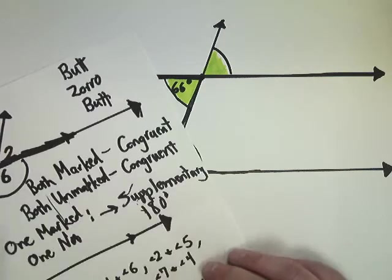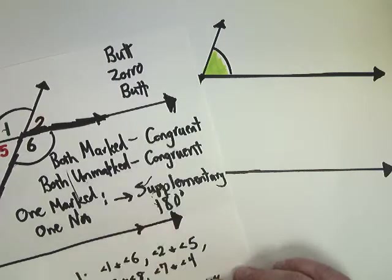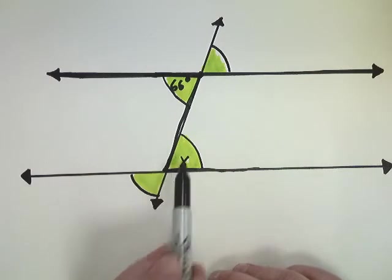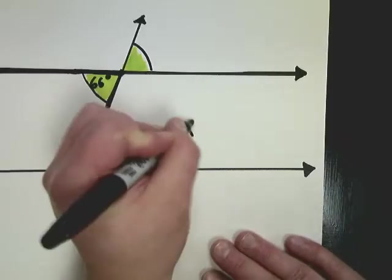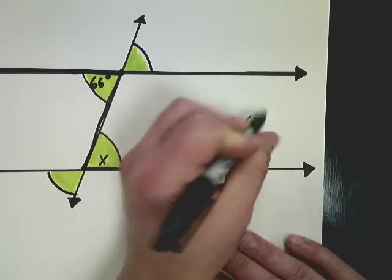Now, I said in my original that if they were both marked, then the angles are congruent. Well, in this case, the 66 is in green and the X is in green, so X is equal to 66 degrees.